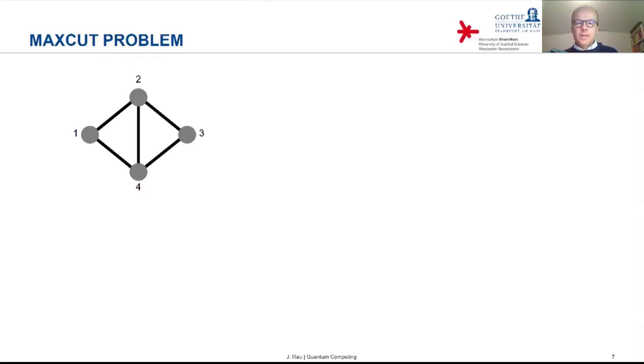That's the following. Consider a graph with nodes and edges. Here we have four nodes, and many of them, but not all of them, are connected with edges.